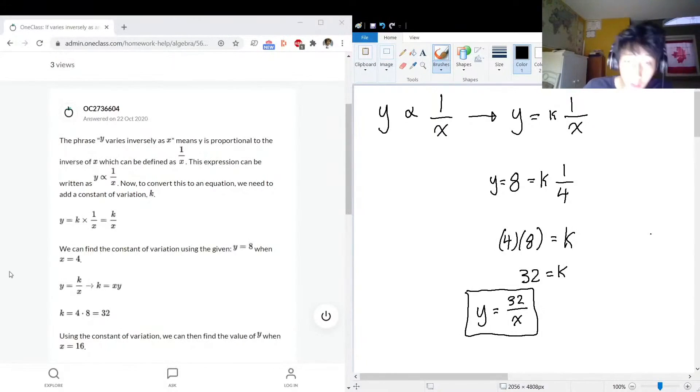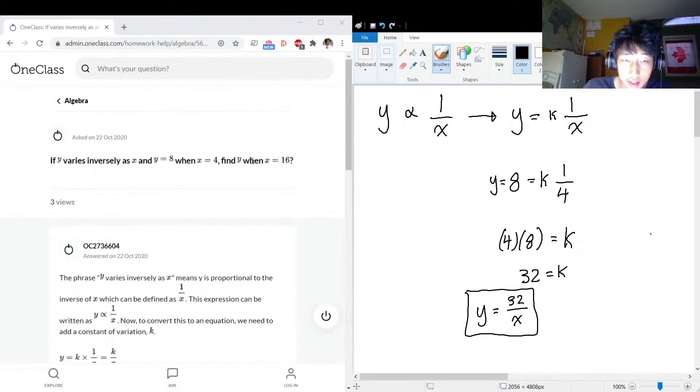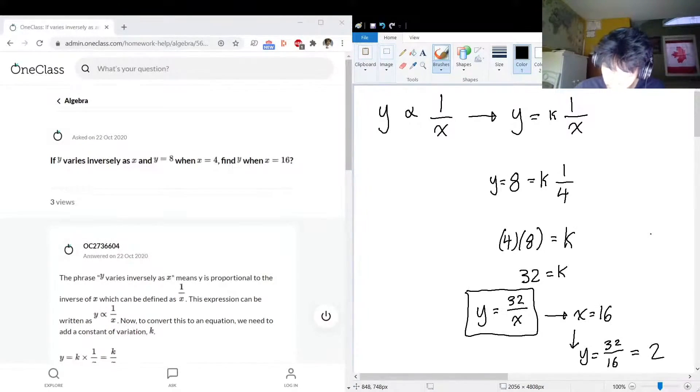Okay, so if the question asks what is y when x is equal to 16? That means y is equal to 32 divided by x, in this case 16. What's 32 divided by 16? Two. So when x is equal to 16, y is 2.